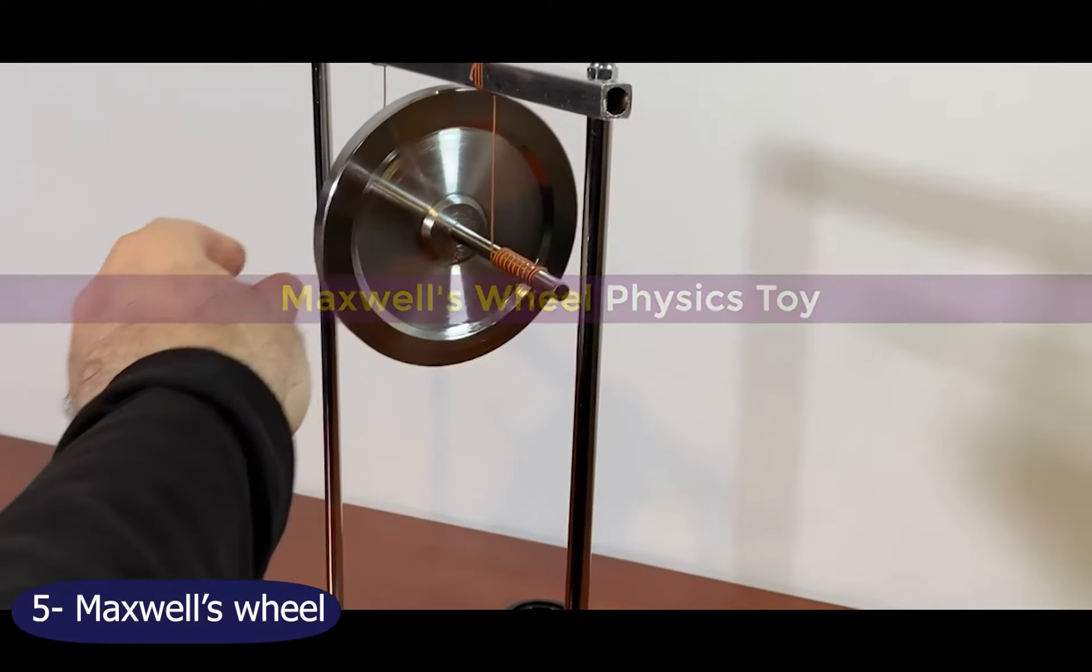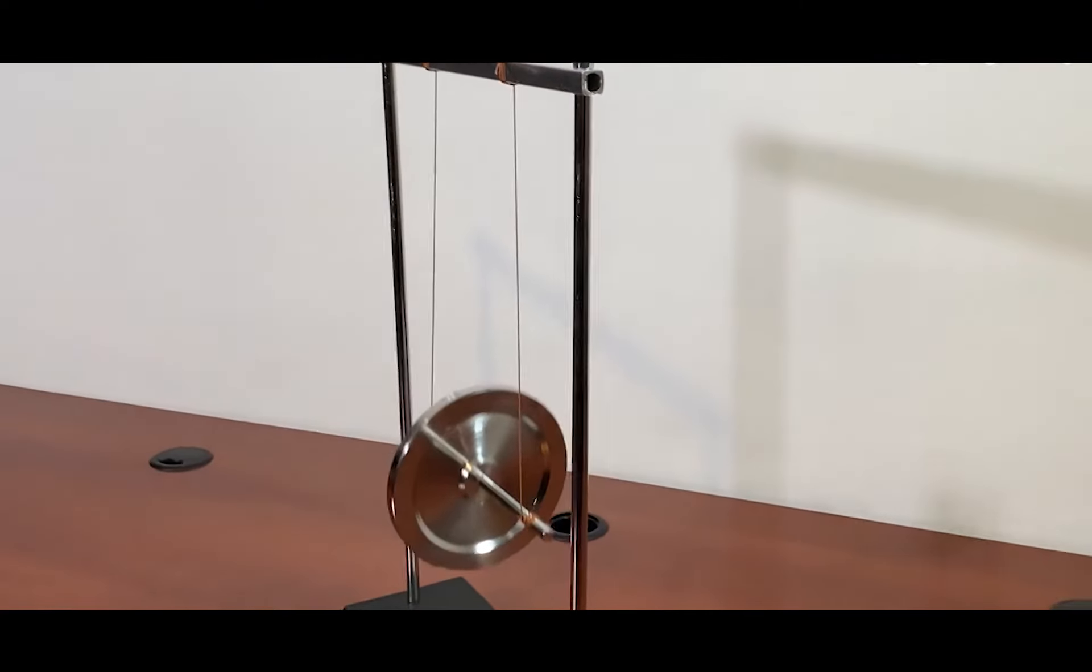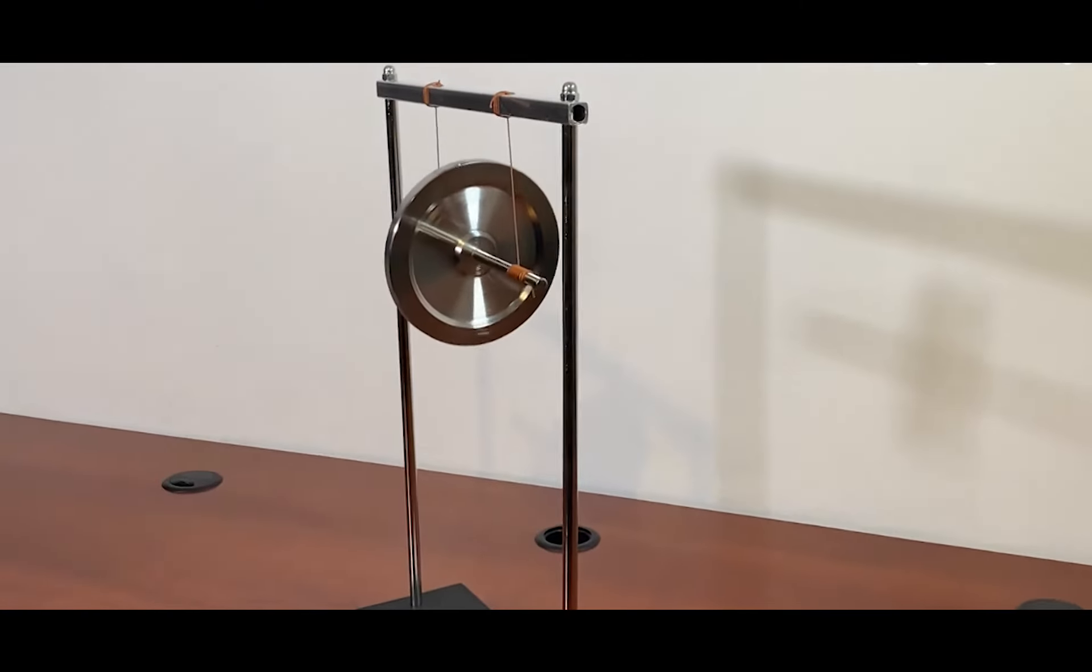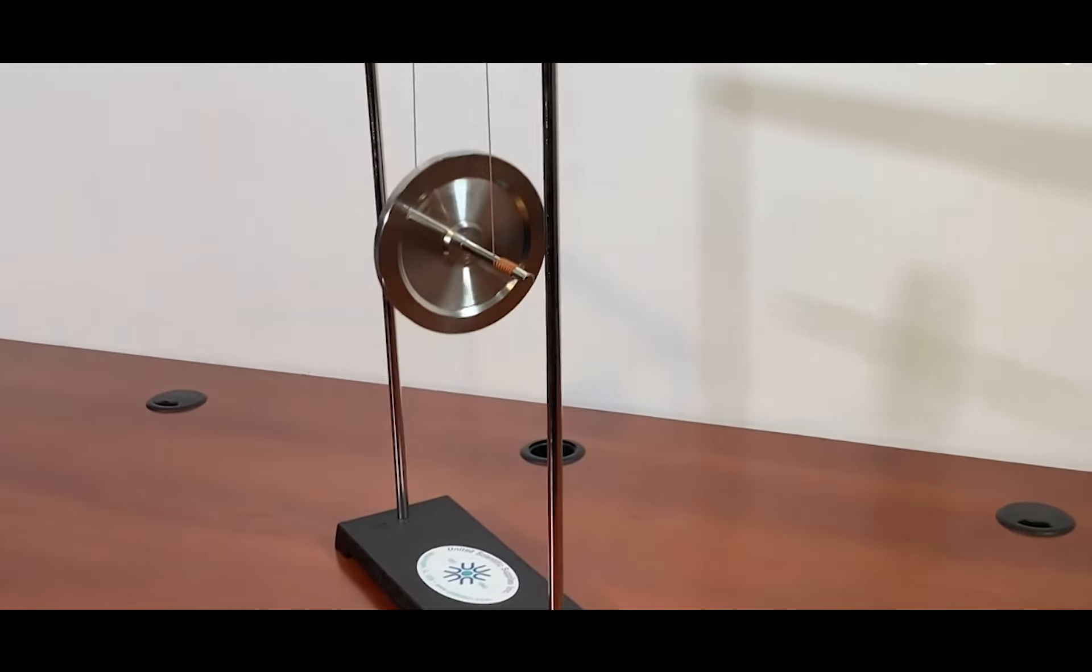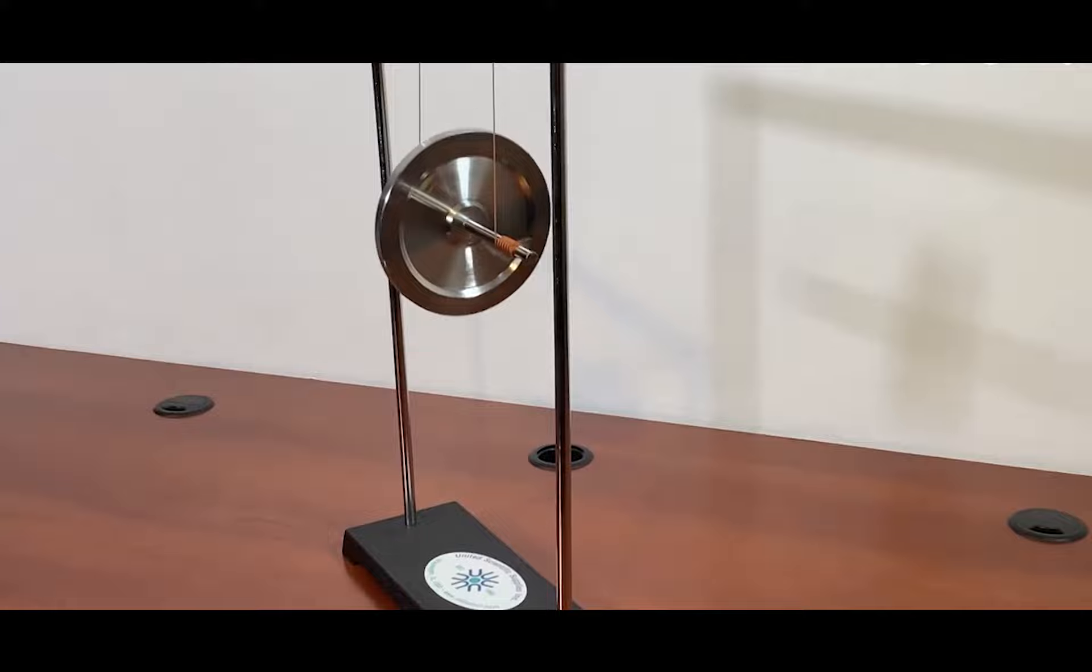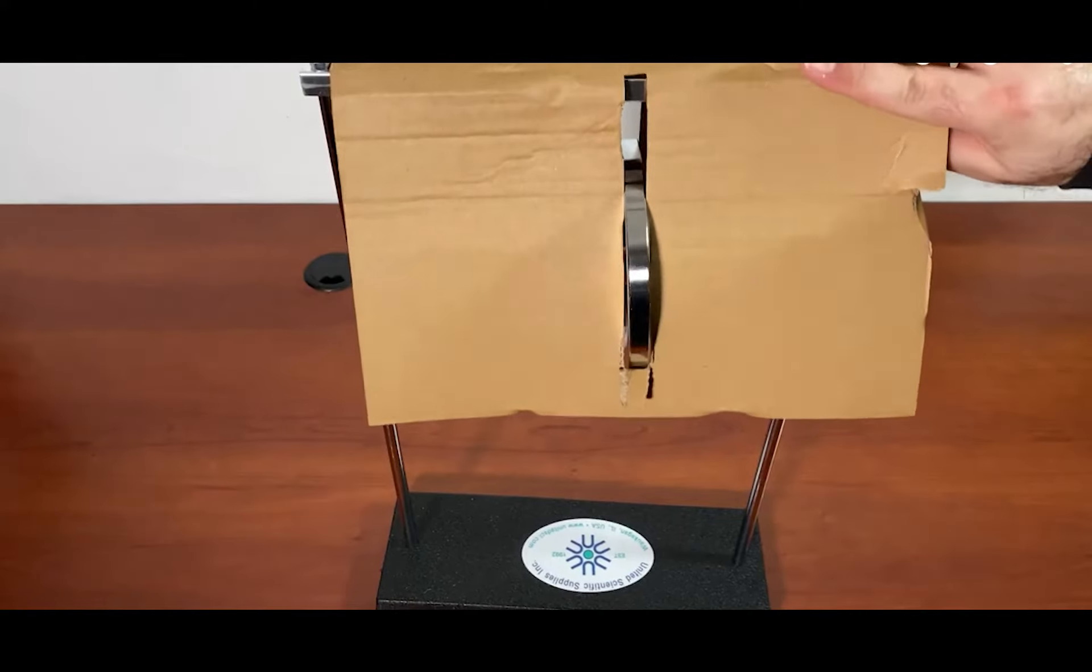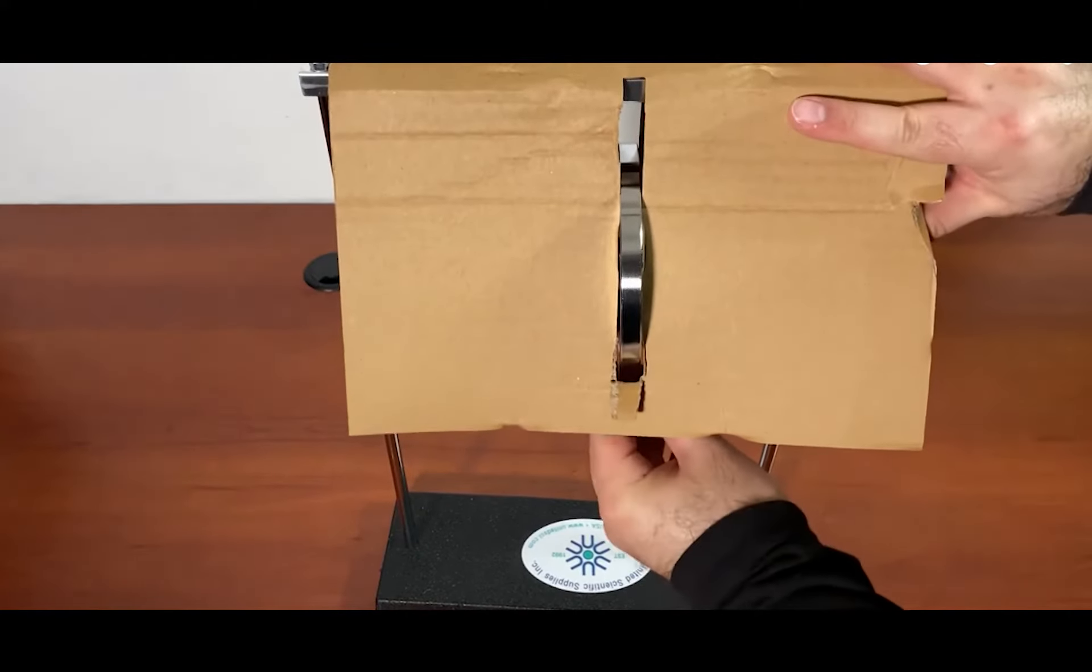Number 5, Maxwell's Wheel. This wheel has multiple uses. It is a perfect example of kinetic energy so it can be used at science classes as a project or in your office if you'd just like to observe this masterpiece.